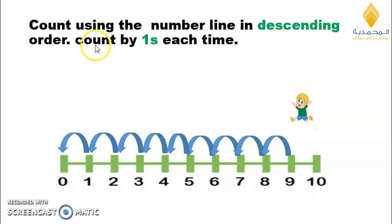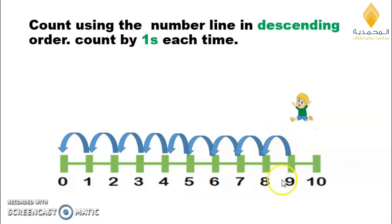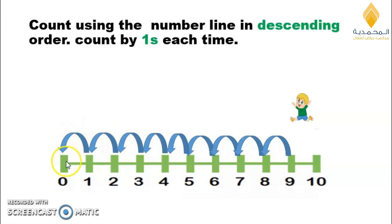Excellent! Now count by ones each time. Ones means one jump each time. Look, this boy wants to count starting from nine in descending order, count by ones. If you start from nine, count with me: nine, eight, seven, six, five, four, three, two, one, zero.